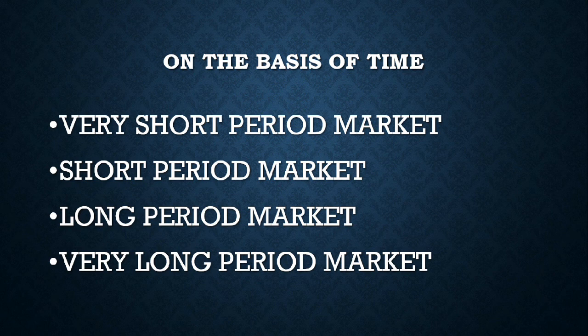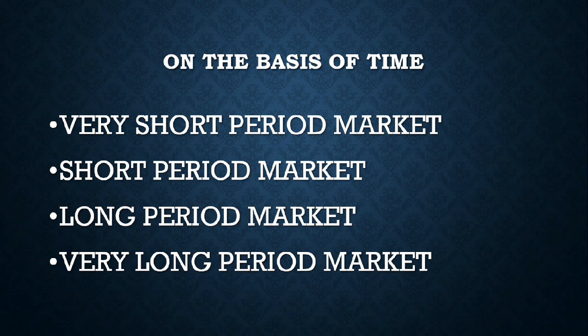In the very short period market, the supply curve is vertical — like a rocket shape. Supply is fixed in this very short period. For example, the price of food can increase in a very short period of time.